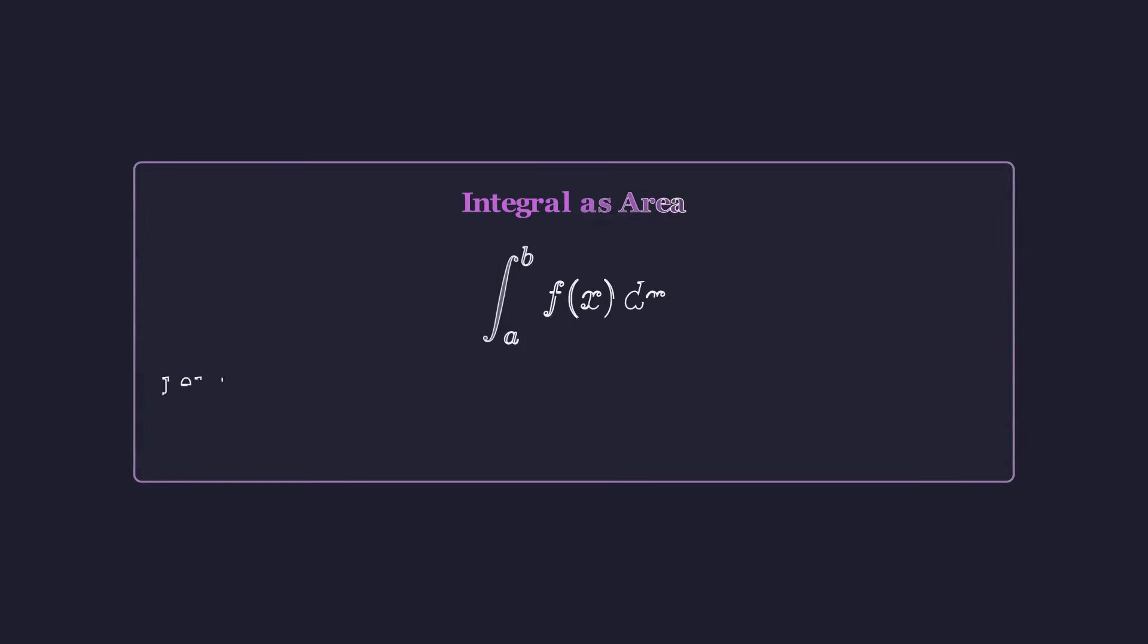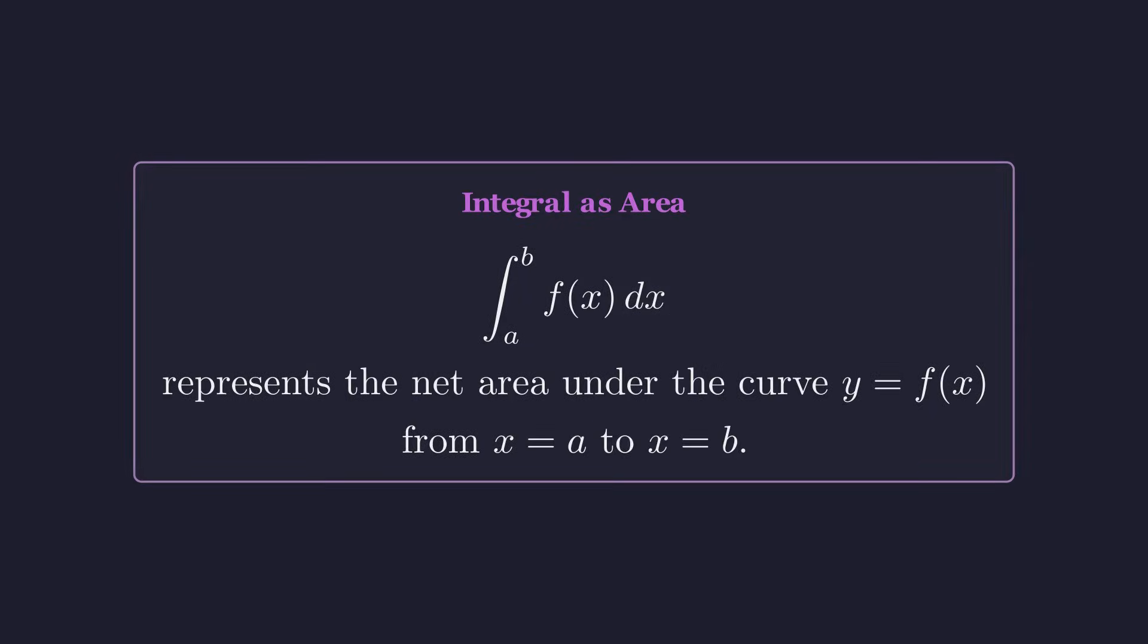Now remember, a definite integral from a to b is just the area under the curve between those points. So our integral is asking for the area under this semicircle from x equals negative 2 to x equals 2.